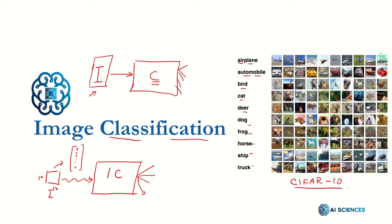For example, if the classification system accepts a particular image, it should produce 'dog'. Now, the question is how these classification systems and image classification systems are built. An image classifier is a classifier which actually operates on images as a 2D object representation.